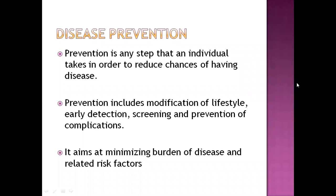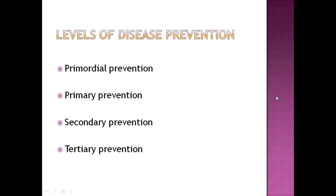Before learning about levels of disease prevention, let me introduce you to what disease prevention is. Prevention is basically anything that you do so that you have less chances of having a disease. It includes activities like modification of lifestyle, early detection of disease, screening for the disease, and prevention of complications. The main aim of disease prevention is to minimize the burden of disease and its related risk factors.